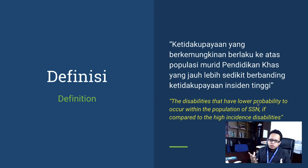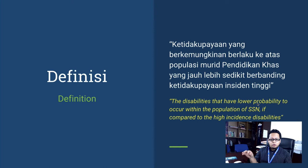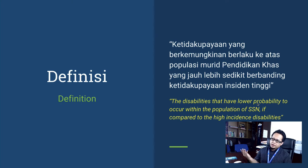By definition, it's the disabilities that have a lower probability to occur within the population of students with special needs, if compared to high incidence disabilities. So low probability means that the chance of you bumping into students with that kind of disability is low in the population of students with special needs. That is how we define low incidence disability. Simple. Non-technical.